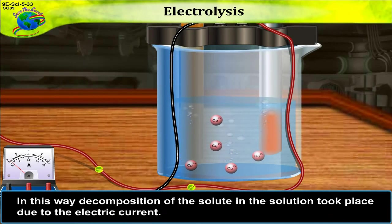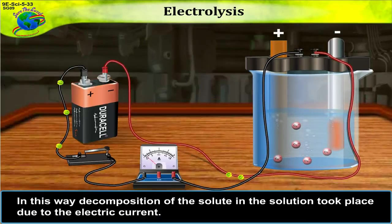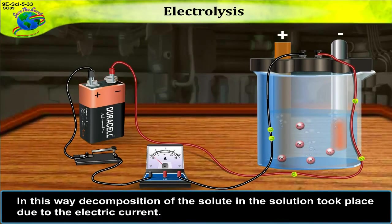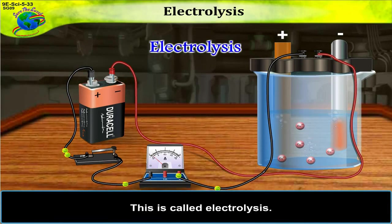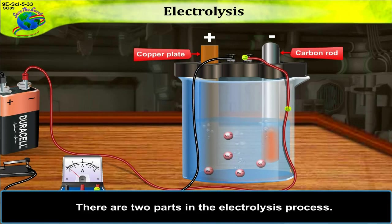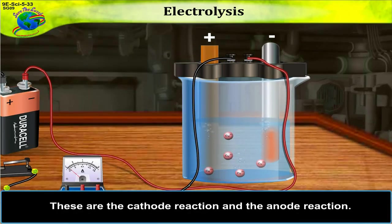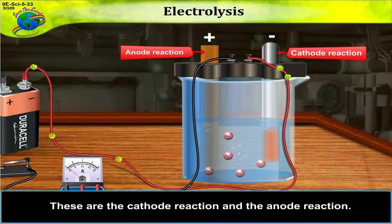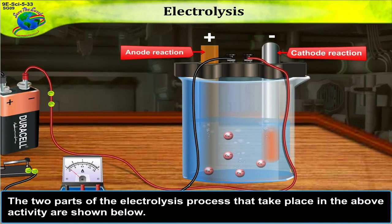In this way, decomposition of the solute in the solution took place due to the electric current. This is called electrolysis. There are two parts in the electrolysis process. These are the cathode reaction and the anode reaction. The two parts of the electrolysis process that take place in the above activity are shown below.